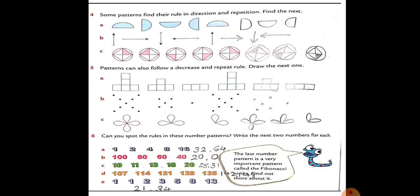Phir B: 100 mein se 20 kata toh 80; 80 mein se 20 kata toh 60; 60 mein se 20 kata toh 40; 40 mein se 20 kata toh 20; aur 20 mein se 20 kata toh 0.